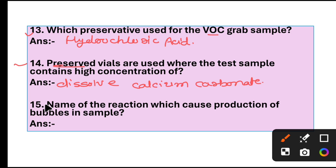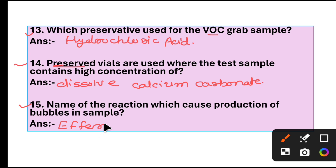Question 50: Name of the reaction which causes production of bubbles in the sample. Answer: Effervescent reaction.